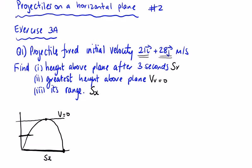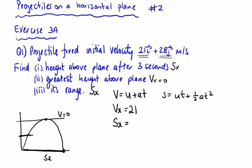To find the height after three seconds, let's write our equations. V = U + AT. V_x with no acceleration is just 21. For s_x, using s = ut + ½at².